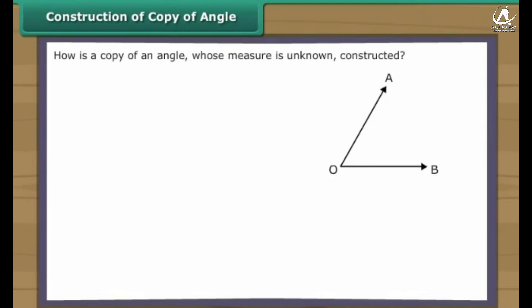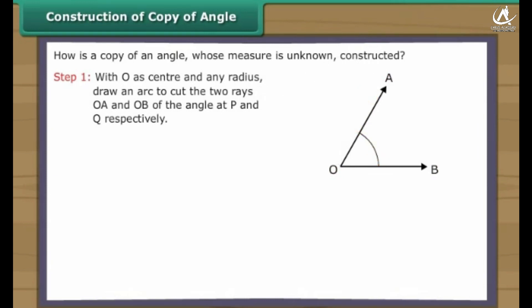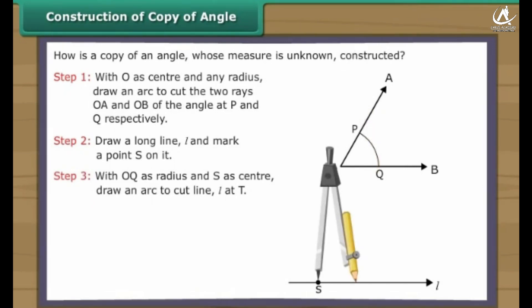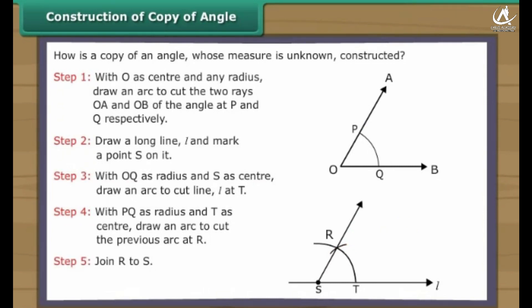Construction of copy of angle. How do we construct a copy of an angle whose measure is unknown? Angle AOB is given. With O as center and any radius, draw an arc to cut the two rays OA and OB at P and Q respectively. Draw a long line L and mark a point S on it. With OQ as radius and S as center, draw an arc to cut line L at T. With PQ as radius and T as center, draw an arc to cut the previous arc at R. Join R to S. Angle RST is equal to angle AOB.